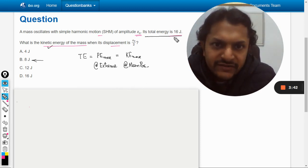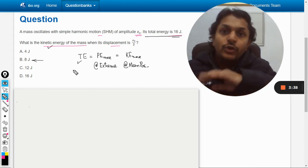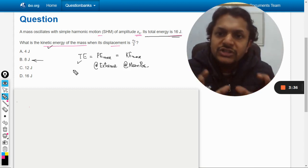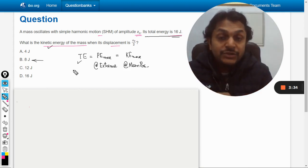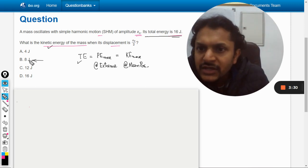Now the total energy is given as 16, so total energy is given. So either we are going to use the maximum potential energy at the extreme positions or the maximum kinetic energy at the mean position. So let us see.